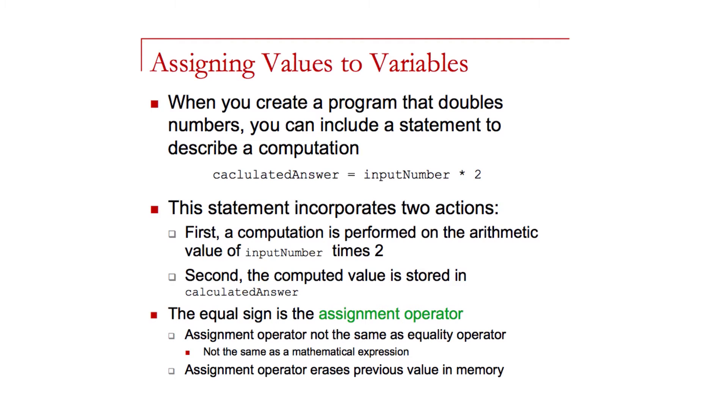So there's two specific actions here, computing the result of multiplying inputNumber by two, and then storing the value into the variable calculatedAnswer. So the equal sign in this case is being designated as the assignment operator. The assignment operator is not an equality operator that we would have in terms of general mathematical expressions. So there's a difference here.